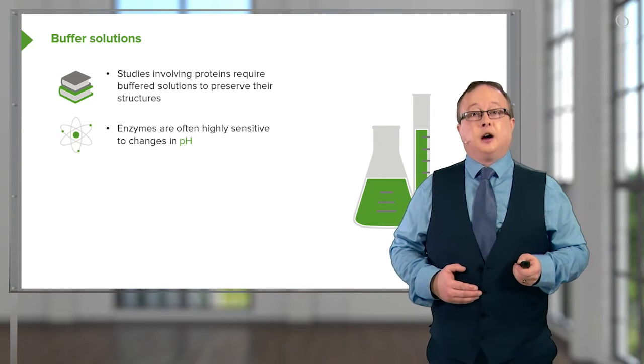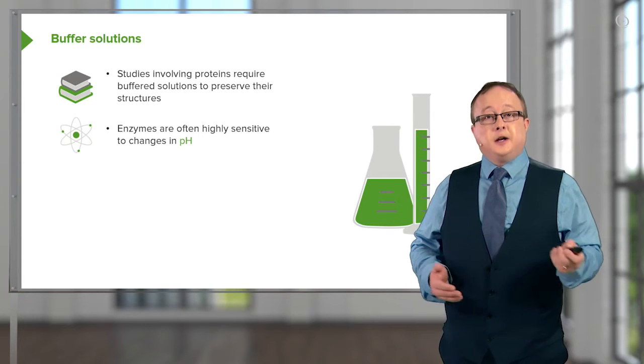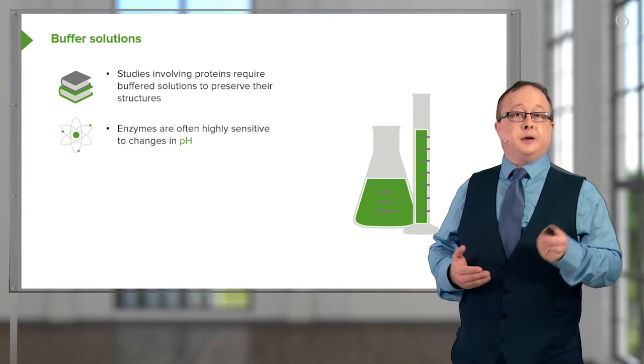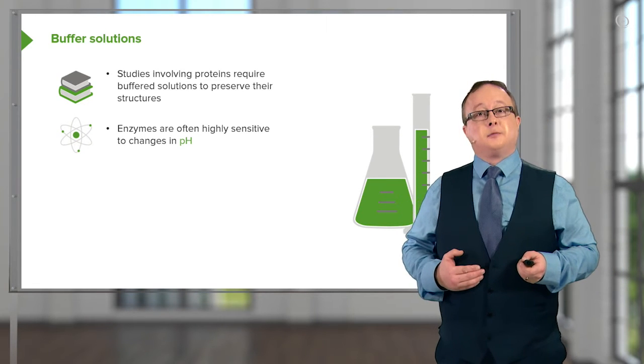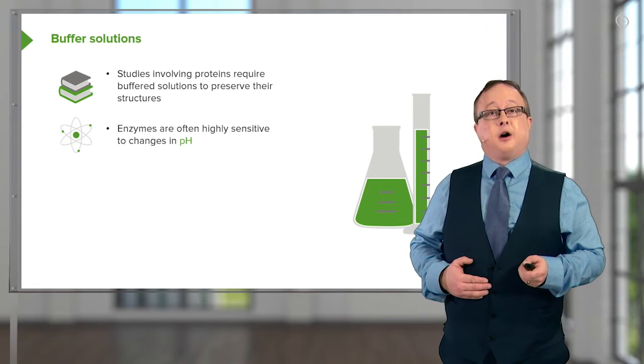Enzymes in particular are often highly sensitive to changes in pH and indeed one of the ways in which proteins can be denatured, i.e. enzymes can be stopped doing what they do, is by treating them to an acid and heat bath.